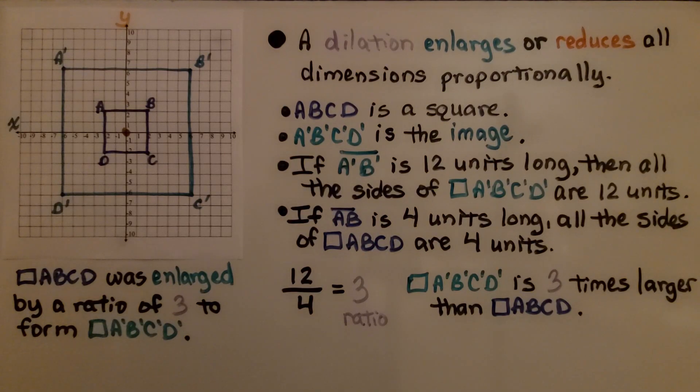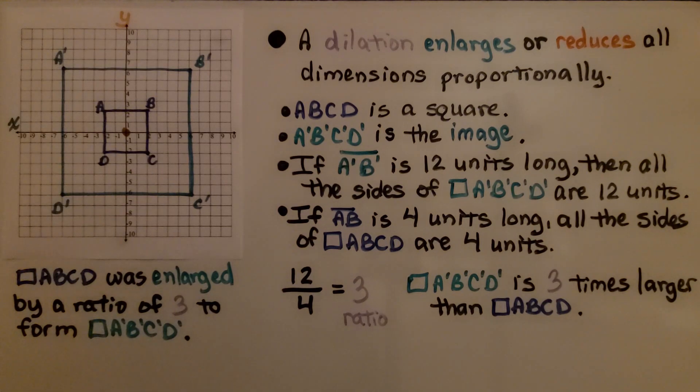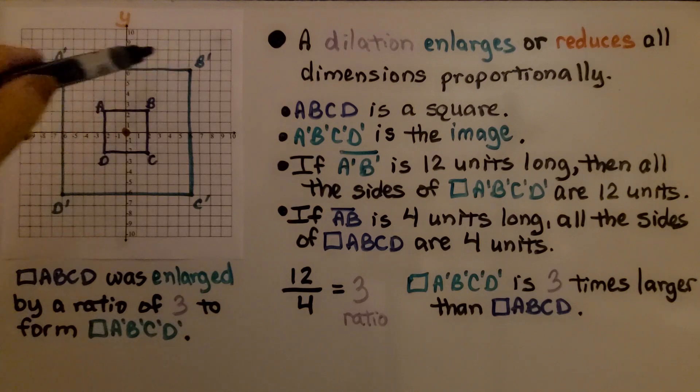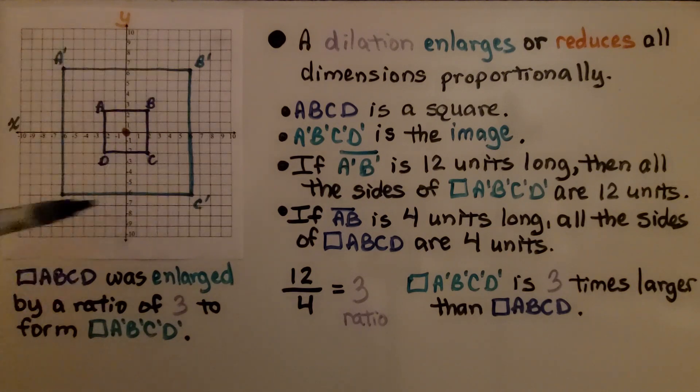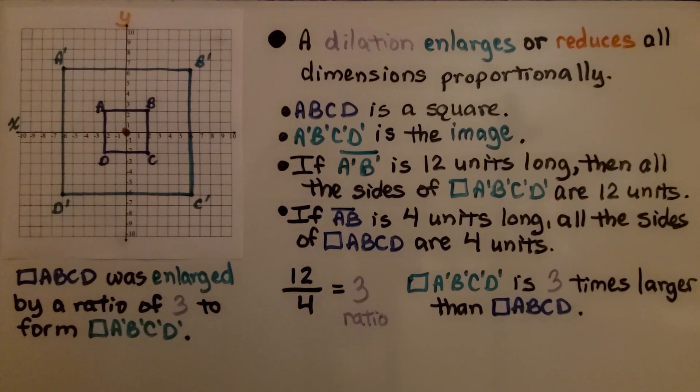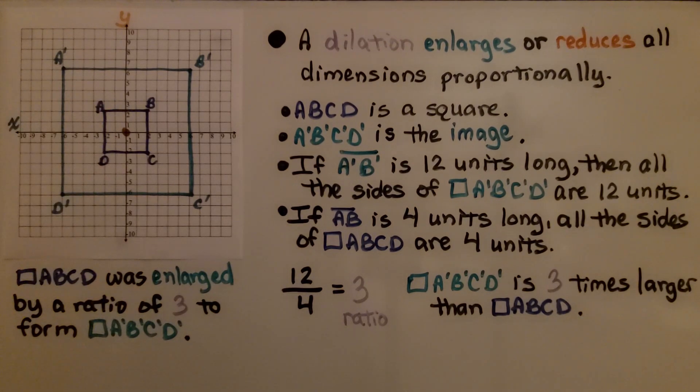A dilation enlarges or reduces all dimensions proportionally. ABCD is a square. A prime, B prime, C prime, D prime is the image. If segment A prime B prime is 12 units long, then all the sides of square A'B'C'D' are 12 units long. That's the definition of a square. If segment AB is 4 units long, all the sides of square ABCD are 4 units long.